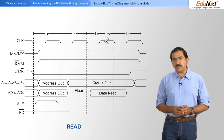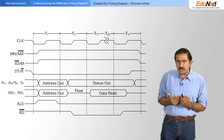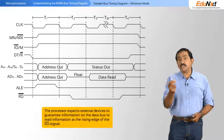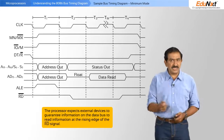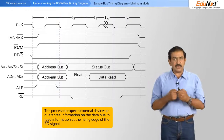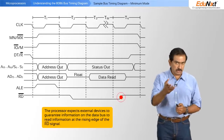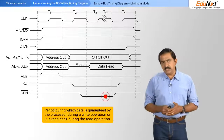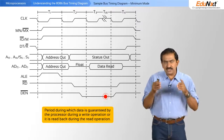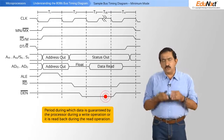Then there is something called the read bar. The processor is now reading information in this case from memory. The processor expects external devices to guarantee that information is ready on the data bus for it to read at the rising edge of the read bar signal — it is your responsibility as a designer to ensure that. Then there is something called data enable, which is the period in which data is guaranteed by the processor during a write operation, or it is read back during the read operation.